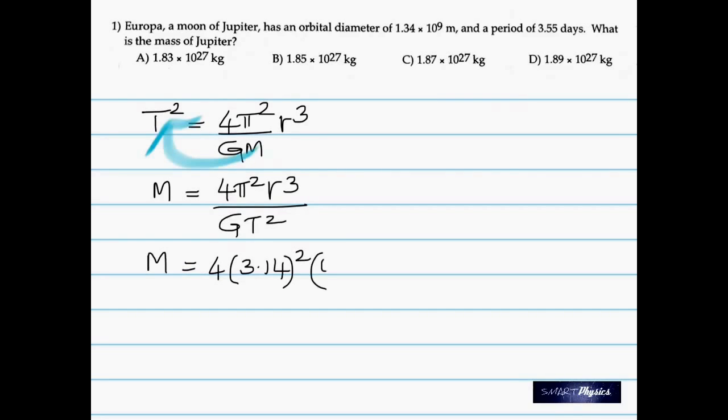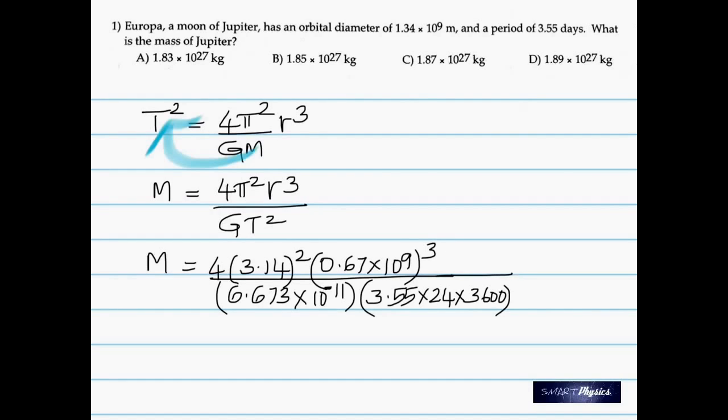And now substitute. That's 4π². The radius is half of the diameter. Remember that if you see the diameter, you always take half of that. And so time now is converted into seconds, 3.55 days. Each day has 24 hours in it and each hour has 3600 seconds in it. So that's why it's been multiplied by 24 to change days into hours and then again by 3600 to change hours into seconds. And this is the universal gravitational constant. On plugging it in and calculating carefully, you get 1.89 × 10²⁷ kg.